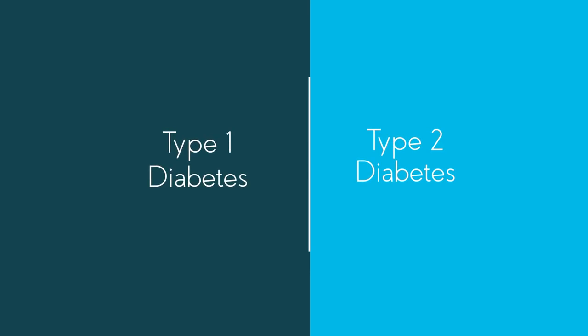So now you should know the difference between type 1 and type 2 diabetes, and that by maintaining a healthy lifestyle, you can reduce your risk of getting type 2 diabetes.